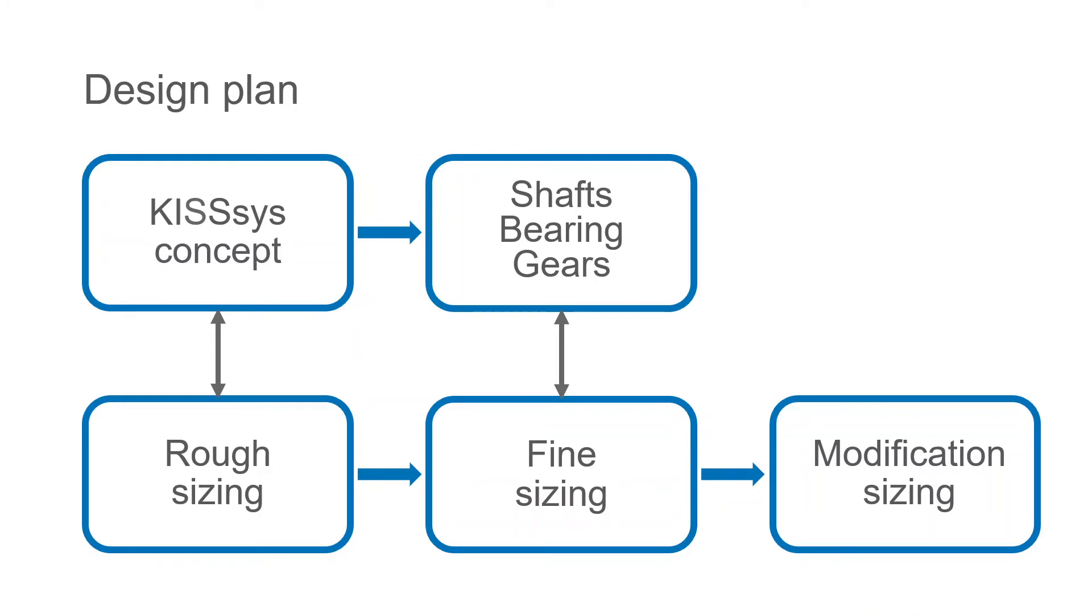We will choose some gear parameters such as module, helix angle, number of teeth, more precise on this stage, on the fine sizing stage. Also, we will do parallel calculations for the shafts and bearings on this stage. Finally, we will move to modification sizing and contact optimization.